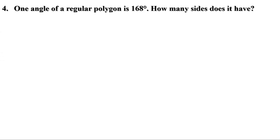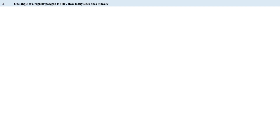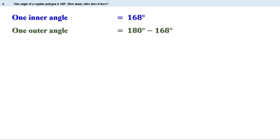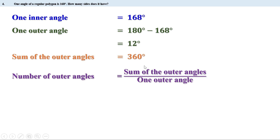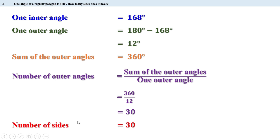Fourth problem. One angle of a regular polygon is 168 degrees. How many sides does it have? Given that one inner angle is 168 degrees, one outer angle is 180 minus 168, which equals 12 degrees. We know the sum of the outer angles is 360 degrees. So the number of outer angles is 360 divided by 12, which is 30. Since the number of sides, angles, and outer angles are equal for any polygon, the polygon has 30 sides.